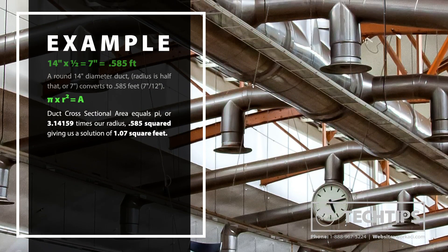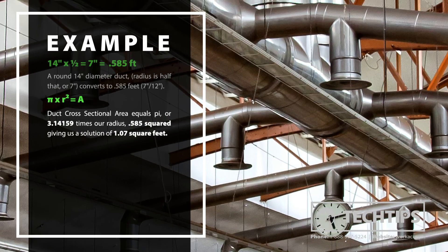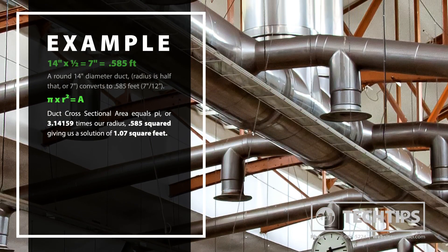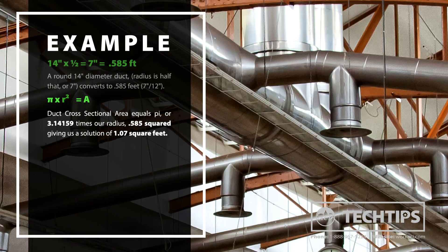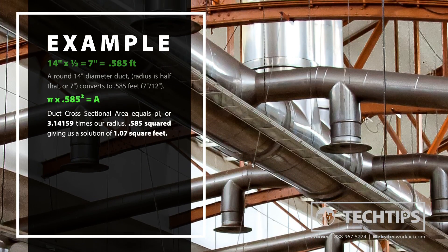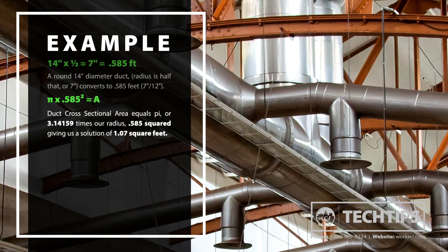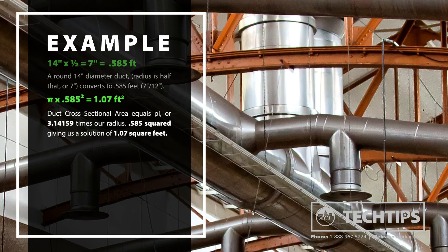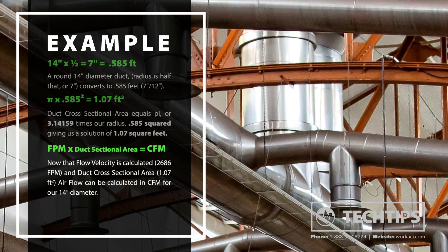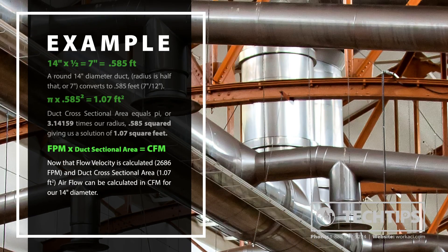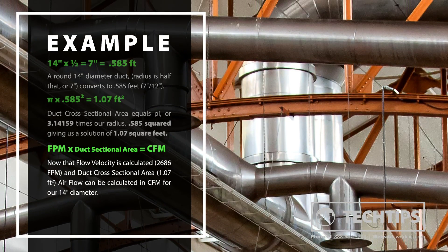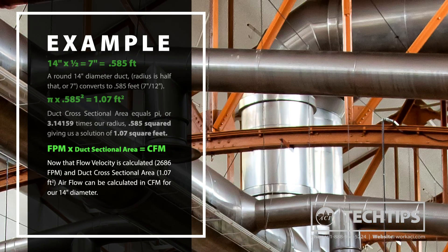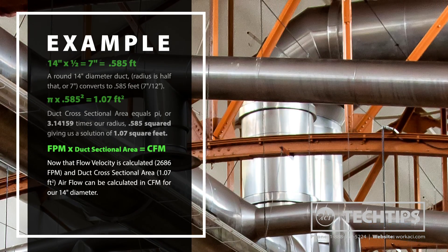Substituting our values into the equation, we see that the duct cross-sectional area equals pi, or 3.14159, times our radius, 0.585, squared, giving us a solution of 1.07 square feet. Now that we have calculated our flow velocity and our duct cross-sectional area, we can calculate airflow in CFM for our 14-inch diameter duct.